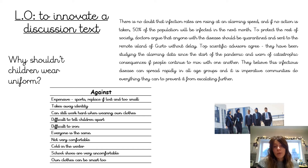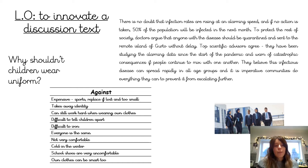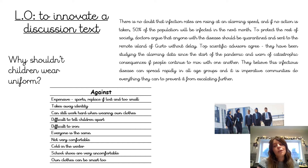Here are some ideas: it can be expensive, especially sports uniform when you get to secondary school, and you have to keep replacing it if you lose it or you have a growth spurt and need bigger sizes. It takes away your identity. It's difficult to tell children apart. It's difficult to iron. Everyone is the same. It's not very comfortable — shirts, collars, and ties can be uncomfortable. It can be cold in winter and you can't layer up as much, whereas you might be able to wear a jumper or fleece. School shoes are very uncomfortable too, so you might be better off in trainers. And own clothes can be smart too — you could have a smart casual look and not look scruffy just because you're wearing your own clothes.